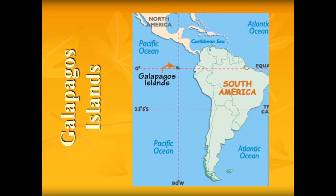Let's do a little recap of what we learned last week and the week before. Darwin went on some travels when he was young for about five years. He visited many different places, but one that really stuck out was the Galapagos Islands.